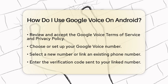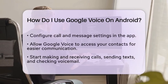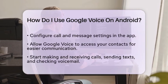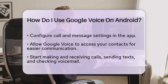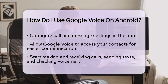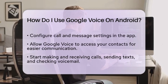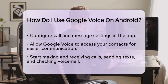Now it's time to configure your call and message settings. You can decide if calls made from your linked number should go through Google Voice or directly from your device's native phone app. It is also helpful to allow the app to access your contacts, making calling and messaging easier.